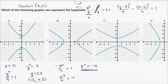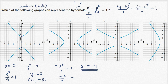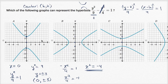The key takeaway: whichever term is positive, and whatever variable that is, that's the direction the hyperbola opens. Since we found that the points (0, ±3) are on the graph, choice A looks like a very good candidate. The other choice that opens up and down doesn't have (0, ±3) — it has (0, ±2). So we can feel confident about choice A.